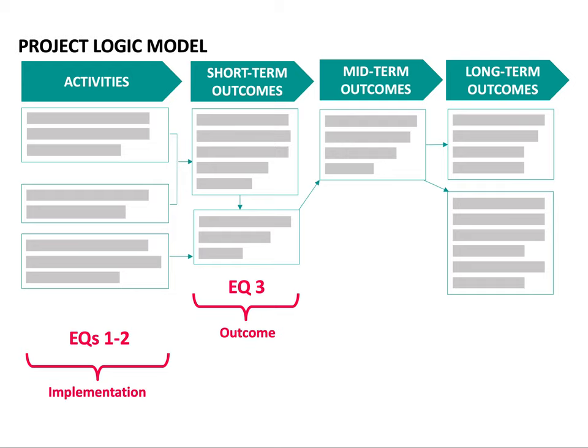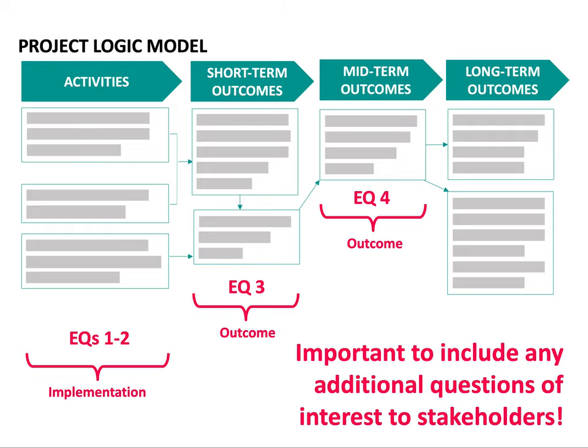The evaluation should also ask questions about short-term outcomes — what changes do you expect to see directly after activities are carried out? And what are the expected consequences of those changes? Asking about short-term and mid-term outcomes can make a larger argument about the effectiveness of your project, rather than simply asking questions about activity counts or satisfaction. It can often be difficult to adequately ask about long-term outcomes, as these might be intended consequences 10 years down the road — a much longer timeline than the evaluation. Therefore, you might not always ask evaluation questions about long-term outcomes. As you can see, evaluation questions span all columns of a logic model, asking about both implementation and outcomes.